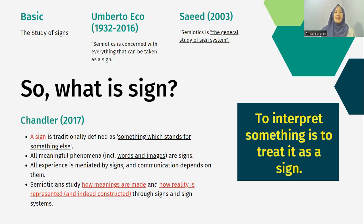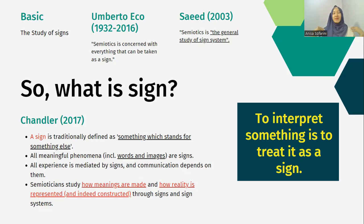Chandler juga mengatakan bahwa all meaningful phenomena — fenomena yang bermakna di sekitar kita — termasuk kata, termasuk gambar sekalipun, itu adalah tanda. Gambar Mona Lisa contohnya adalah tanda. Itu hasil dari interpretasi seseorang, dan ketika kita sebagai penikmat melihat Mona Lisa, kita juga memaknai — proses itu adalah proses meaning making. All experience dimediasi oleh tanda. Communication depends on signs — sekecil kedipan mata itu mengkomunikasikan sesuatu, atau sesimple memandang orang itu mengkomunikasikan sesuatu.